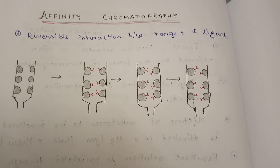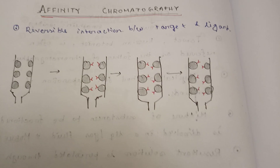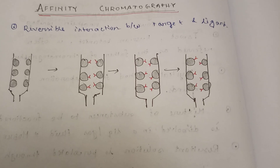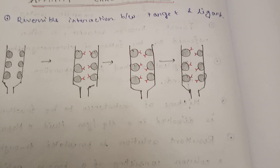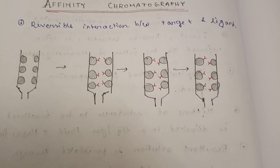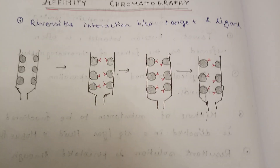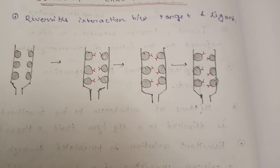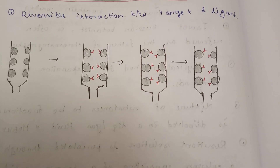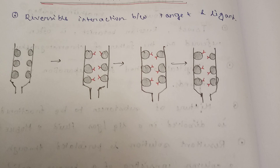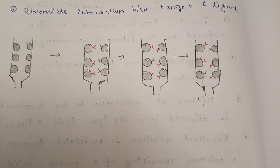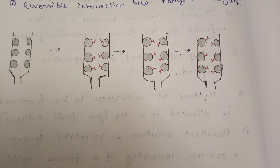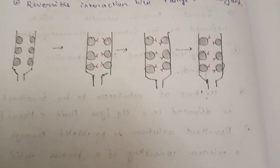For example, if the ligand is an enzyme, then its target will surely be some substrate, substrate analogue, inhibitor, or cofactor. If the ligand is an antibody, the target molecule will be antigen. If the ligand is avidin, the target will be biotin, etc.